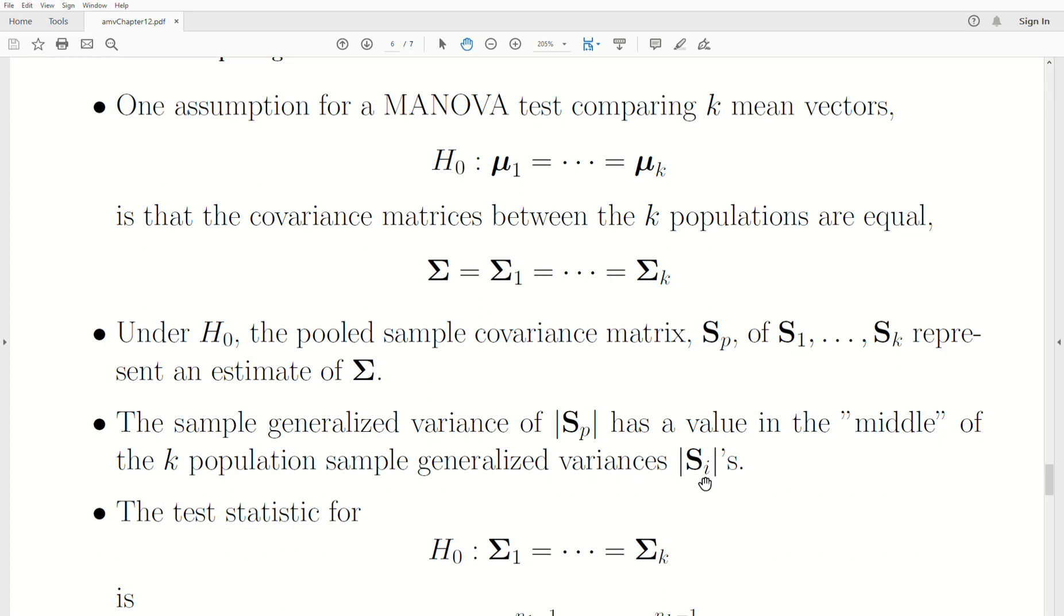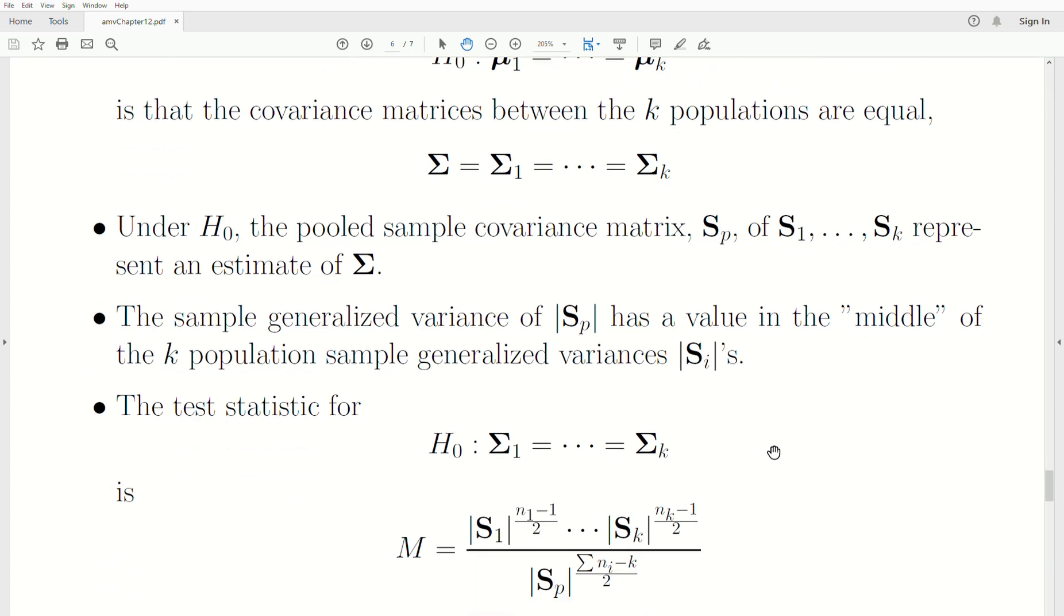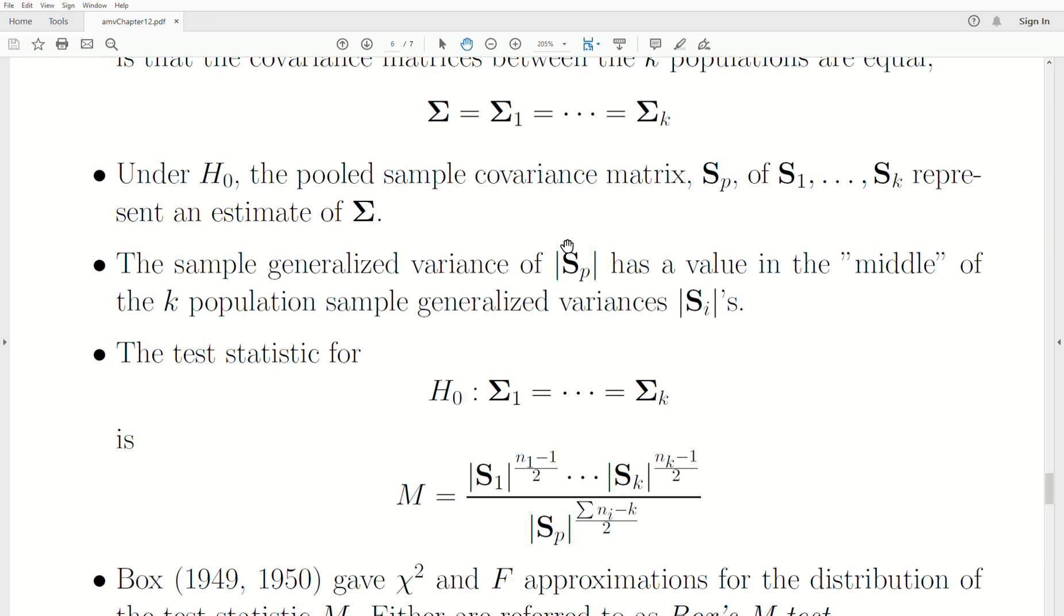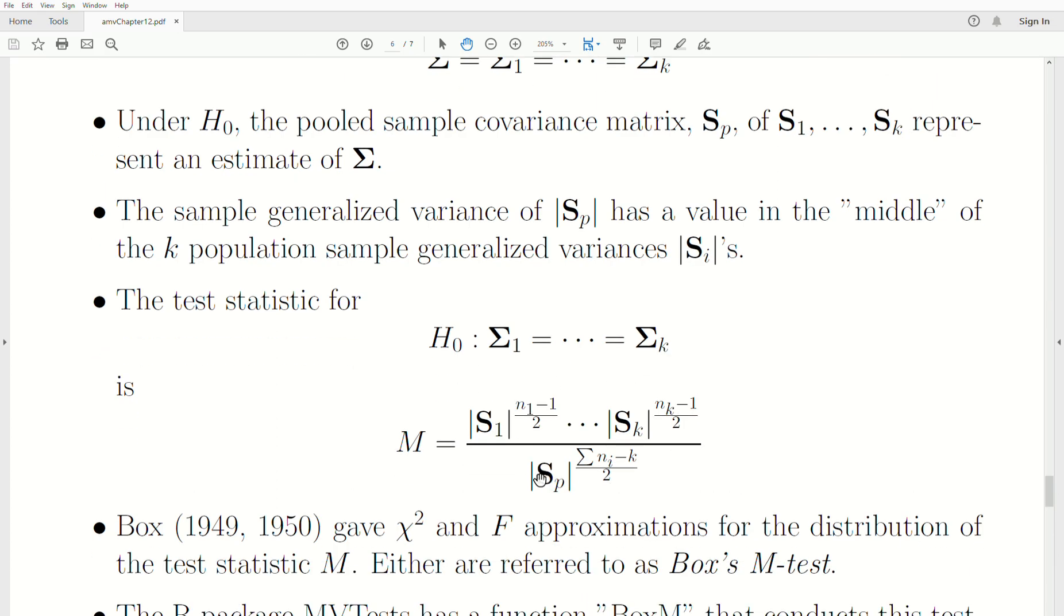It's a pooled estimate, so it's an average of those. And then the test statistic looks at the ratios of the pooled generalized variance to the individual K different sample generalized variances. So the test statistic: are the sample covariance matrices all equal or are they different?